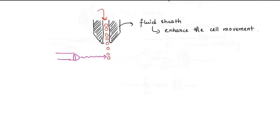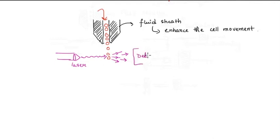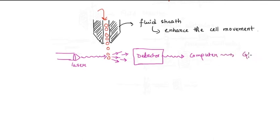Since they are subjected to laser light, after the laser light hits the cell there is some sort of scattering — depending on the cells being hit there would be some sort of scattering. This scattering of light is detected by a detector, and this detector sends the signal into a computer which generates a graph according to the scattering.